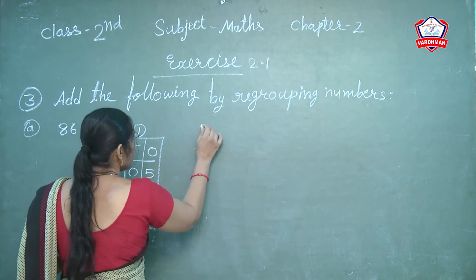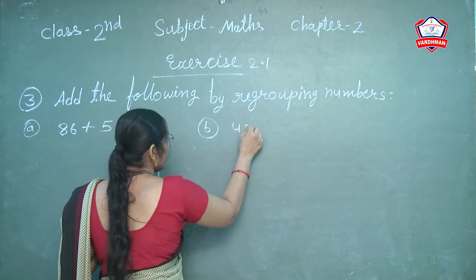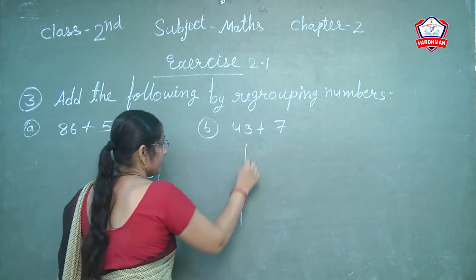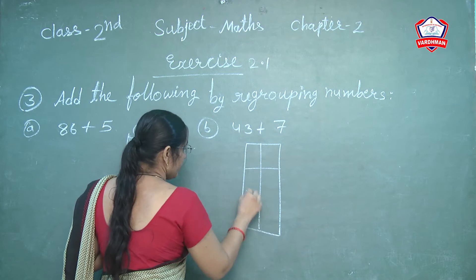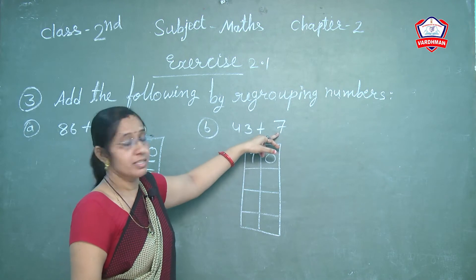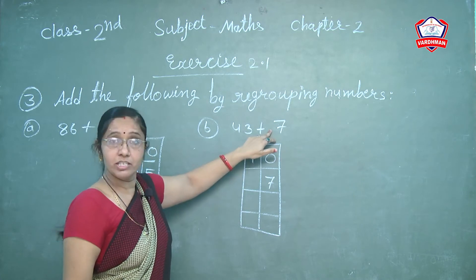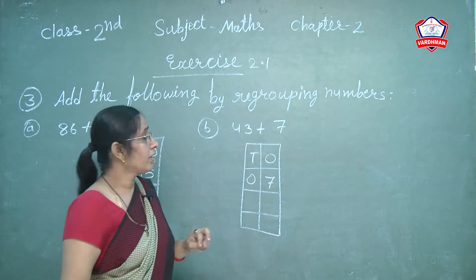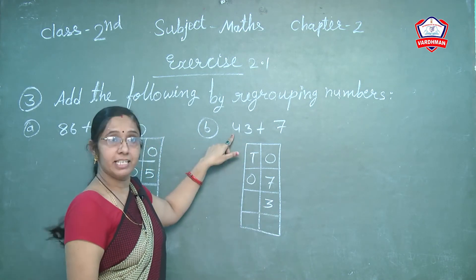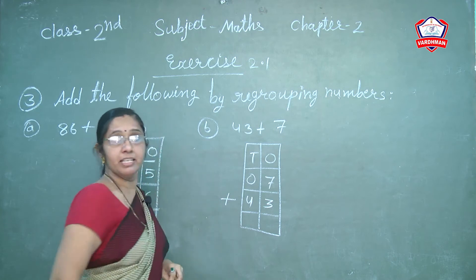Next, question number B: 43 plus 7. Draw the tens and ones columns. First digit is 7 — write 7 in the ones column. Tens of 7 is none, so write 0. Next, 3 is ones — write 3 in the ones column. 4 is tens — write 4 in the tens column. Write the plus symbol.